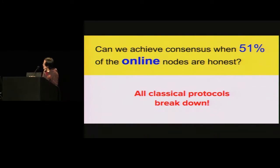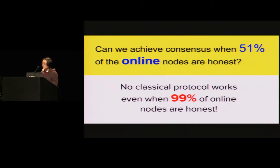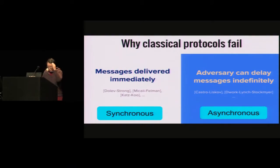We can actually say something even stronger — even when we are willing to assume that among the people who show up, 99% of them are honest, none of the classical protocols will actually work. It turns out that for classical consensus protocols, there are two broad classes: synchronous protocols and asynchronous protocols. In the synchronous model, messages sent will be delivered immediately, whereas in the asynchronous model, the adversary can delay and reorder messages arbitrarily, with an indefinite and unknown delay.